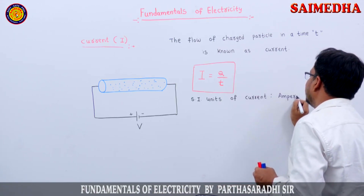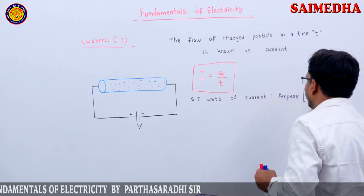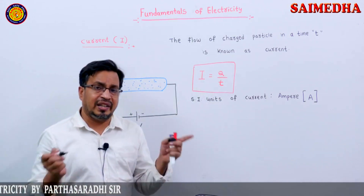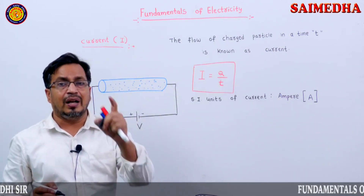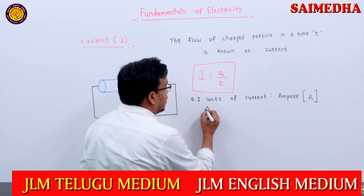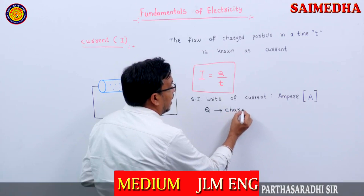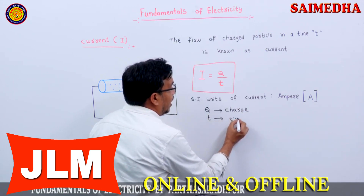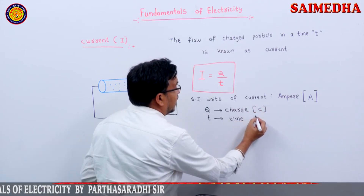The SI unit of current is Ampere. I am writing here Ampere — it is a scientist's name, that is why the first letter is capital. It is represented by A. What is Q here? Charge. What is T? Time. What is the SI unit of charge? Coulombs. What is the basic unit of time? Seconds.